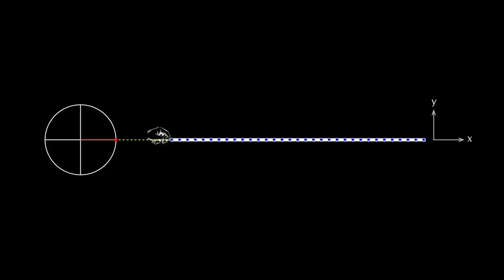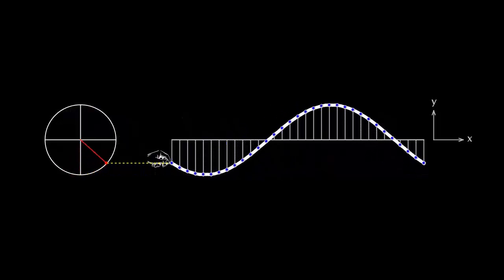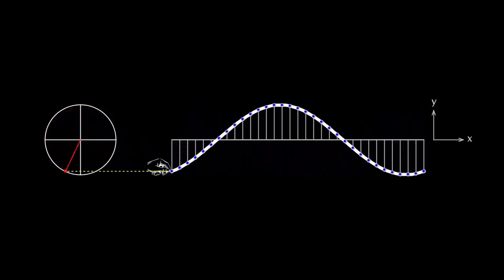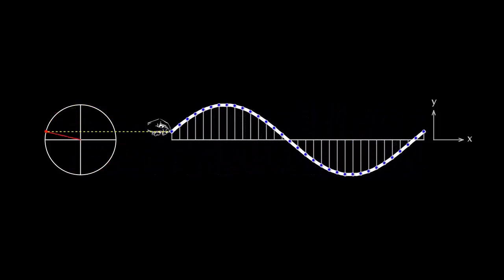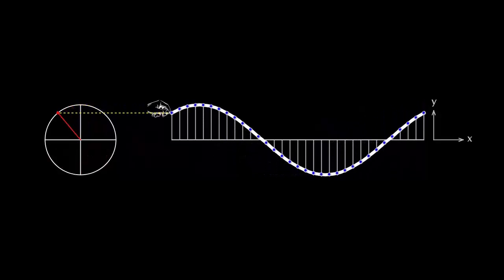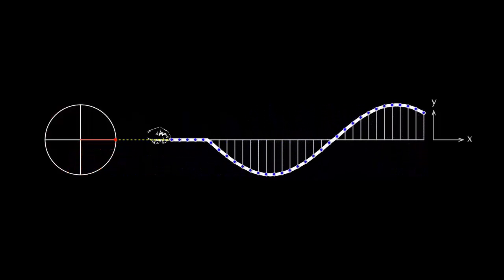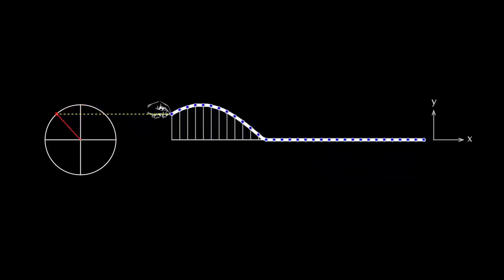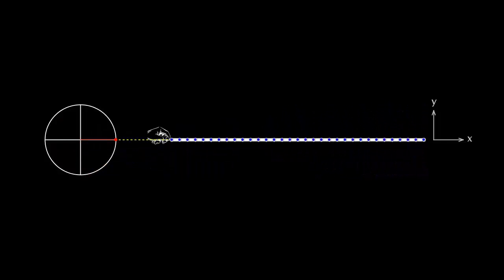A long rope is lying on a smooth horizontal surface. The left end of the rope is set into oscillatory motion perpendicular to its length. The red particle going around the circular path has the same Y coordinate as the left end of the rope, and this particle's angular position defines the phase of the oscillation of the left end. If the end of the rope is oscillated, element after element of the rope begins vibrating and a wave shape travels along the rope.